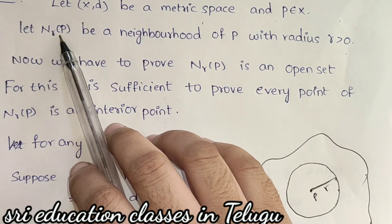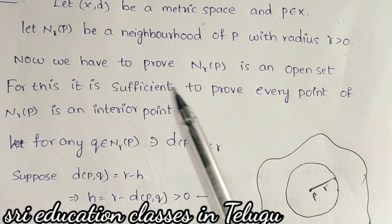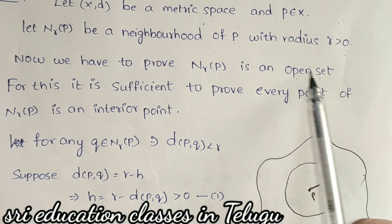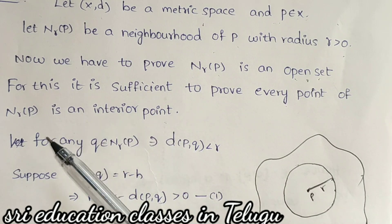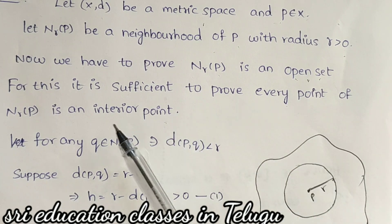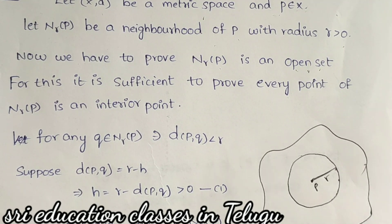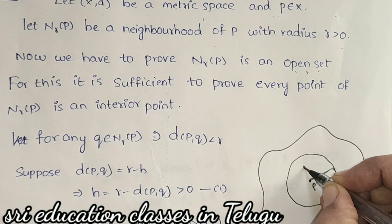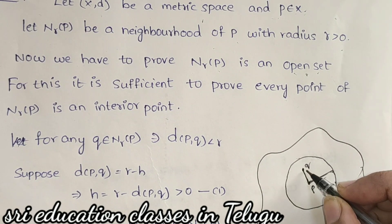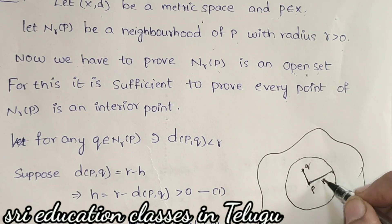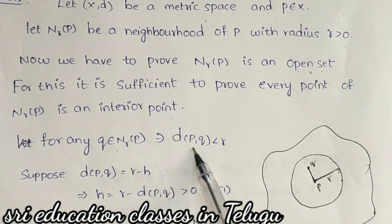Here we have N_r of p — this is N_r of p with radius r. We have a neighborhood N_r of p, and e is an interior point of N_r of p. In the neighborhood, interior points exist. We take a point q and consider the distance from p to q and the radius.